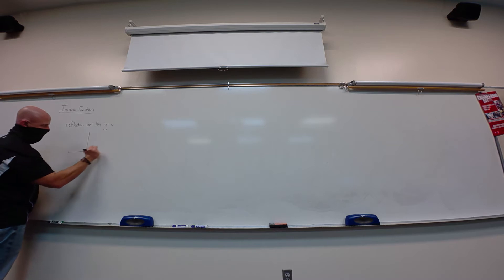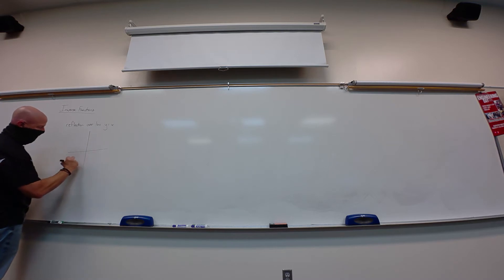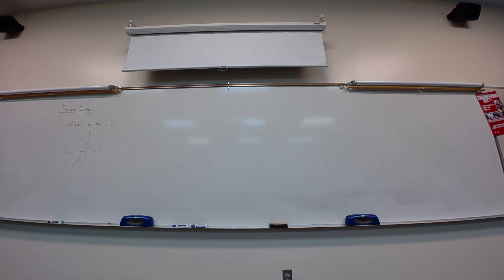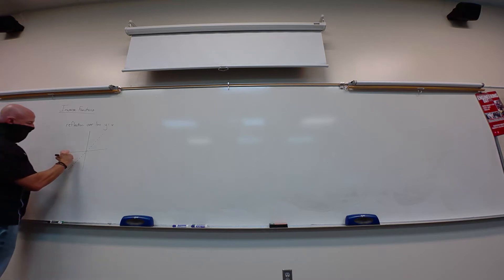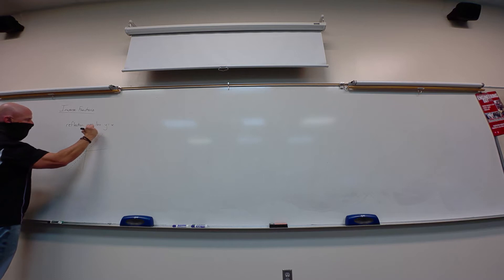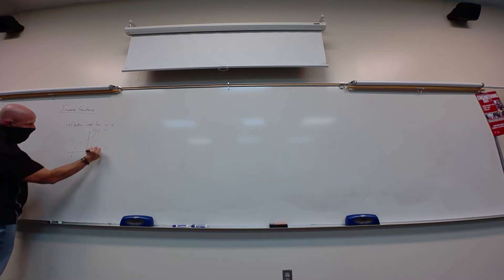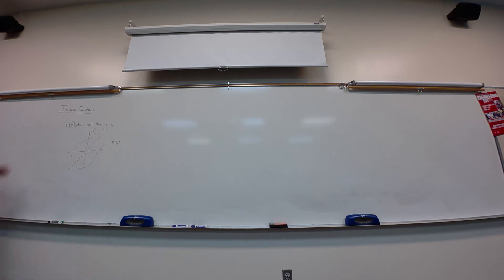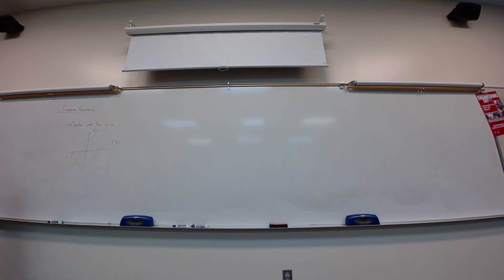So y equals x goes at about 45 degrees. If this was f of x, then this would be f inverse of x. Those should look like a mirror image of each other over that dotted line — one's the original, one's the inverse. It doesn't matter which one is the original; it's just that reflection back and forth.